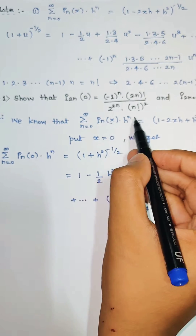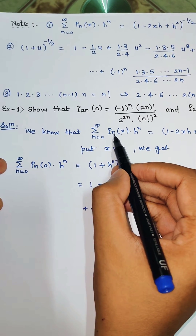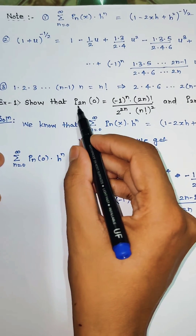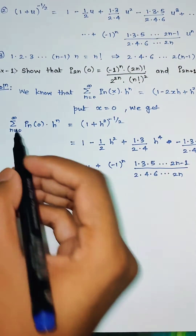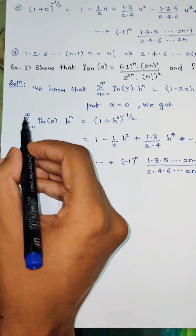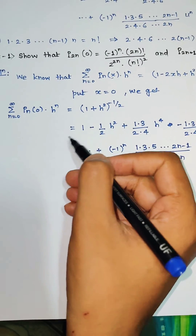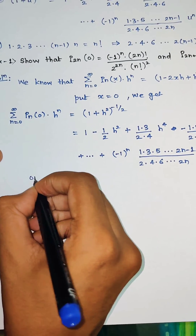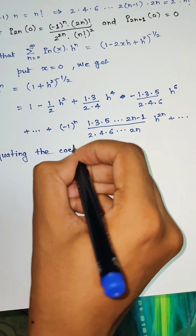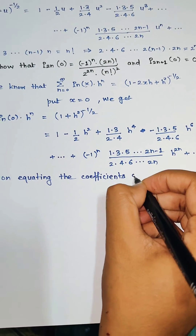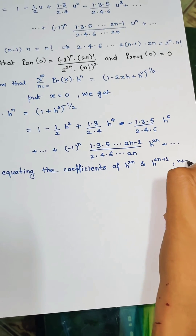In the generating function, P_n(x) is the coefficient of h^n. So P_0 is the coefficient of h^0, P_2 is the coefficient of h², and P_{2n} is the coefficient of h^(2n). Expanding the left-hand side gives P_0, P_1, P_2, ..., P_n, ..., P_{2n}, P_{2n+1}, and so on. We now equate the coefficients of h^(2n) and h^(2n+1) on both sides.